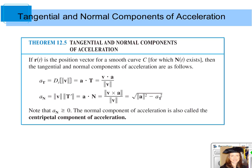Suppose we have r of t, which is a vector valued function for a smooth curve, and the tangential and normal components of acceleration are as follows. A with a subscript t, that's your tangential component of acceleration, is the derivative of the magnitude of the velocity vector valued function in terms of t. It's also the dot product of the acceleration vector valued function with the unit tangent vector. Remember the dot product is a scalar, so when you're finding these tangential and normal components of acceleration, they are going to be scalars, not vectors.